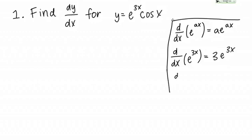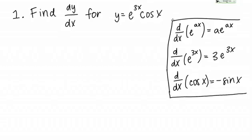What about the derivative of cosine? The derivative of cosine of x is negative sine of x. Using those pieces, let's find the derivative of this entire function: y equals e to the 3x times cosine x.